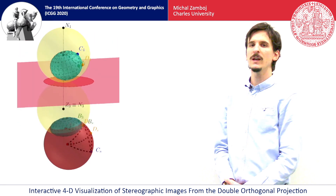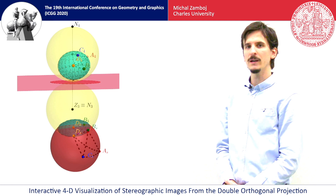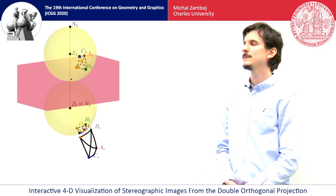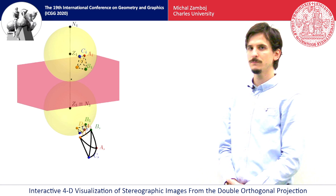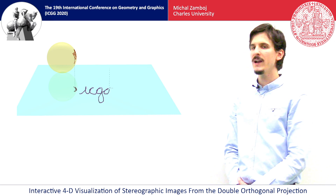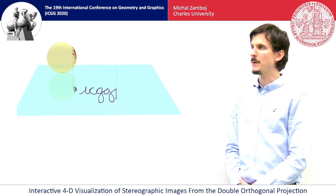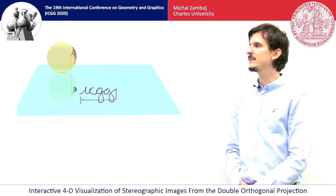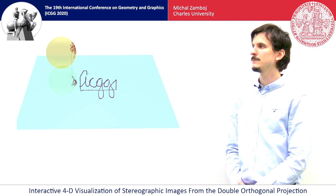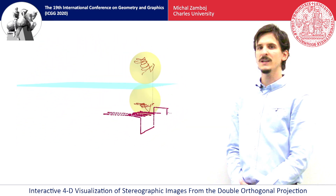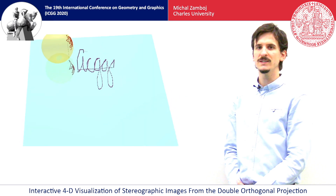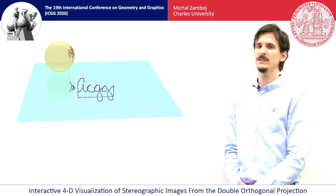It is also important to say that we can not only construct the stereographic images, but we can also create pre-images of points from the stereographic images, and we will use this in the next application. When we can construct pre-images from the stereographic images, we can draw anything in the three-dimensional space and project it back into the three-sphere in the fourth dimension. For example, this is ICGG written in the stereographic projection. Inside of the three-sphere, we can see how ICGG would look like in the fourth dimension. This is quite a silly application, and I will leave further consequences for your imagination.